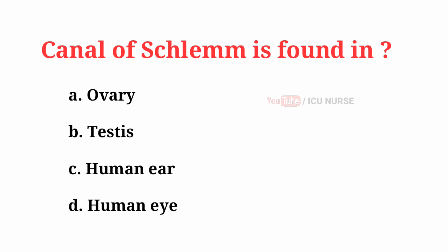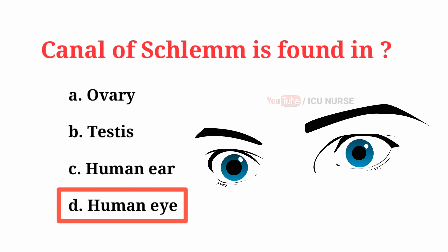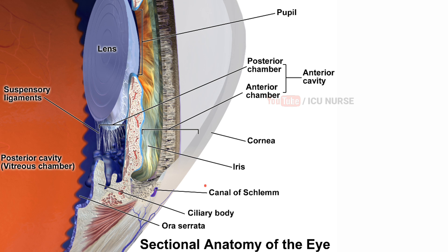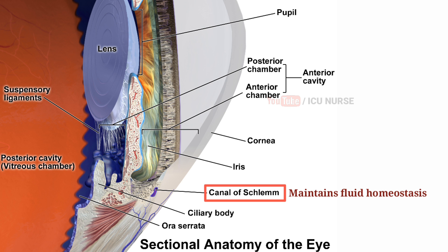Canal of Schlemm is found in — the correct answer is D: Human eye. Schlemm's canal is a unique vascular structure that functions to maintain fluid homeostasis by draining aqueous humor from the eye into the systemic circulation.